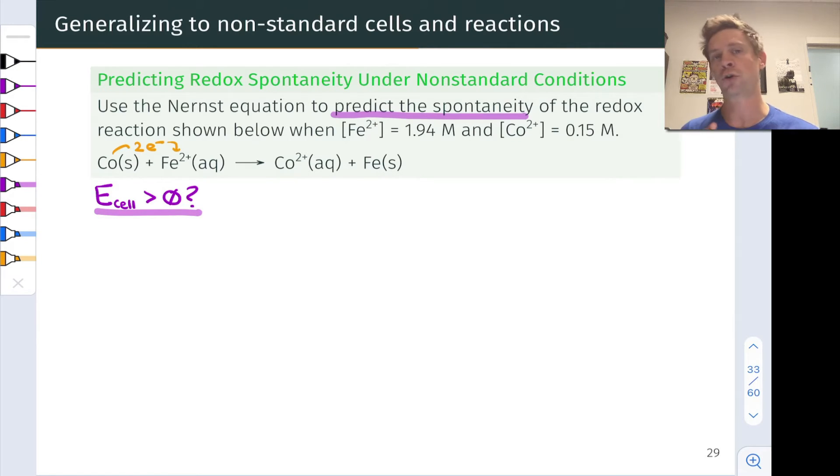The oxidation of cobalt and the reduction of Fe2+. If this turns out negative, then the redox reaction as written is non-spontaneous, and if we set up a galvanic cell under these conditions, in fact, the reverse reaction would take place. Co2+ would be reduced to cobalt 0, and iron metal would be oxidized to Fe2+. So let's dig in and see what happens.